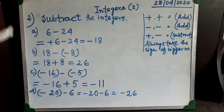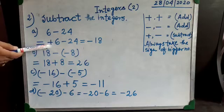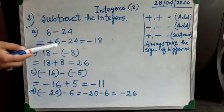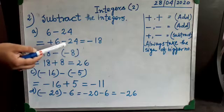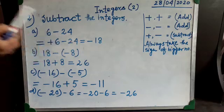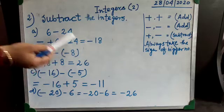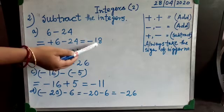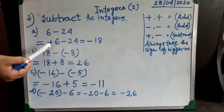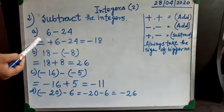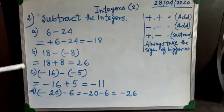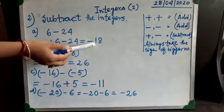The first subtraction example: 6 minus 24. You can see 6 is a positive number, so I have given plus. 24 is already a negative number. When both integers have different signs, we subtract them. So we subtract the numbers — the result is 18. Then, 24 is the bigger number, so the answer is minus 18.